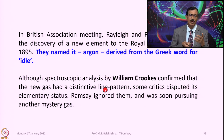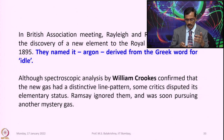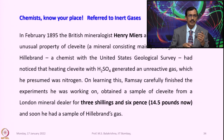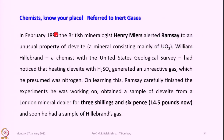Once after the discovery of Argon, he did not give up — he continued working to find out other missing gases. In February 1895, the British mineralogist Henry Meyers alerted Ramsey to an important unusual property of cleavite, a mineral consisting mainly of uranium oxide.